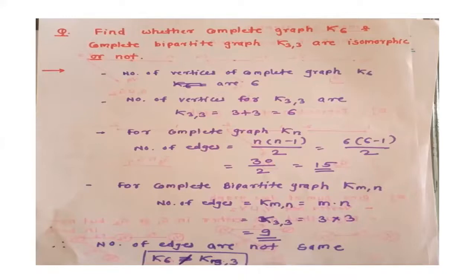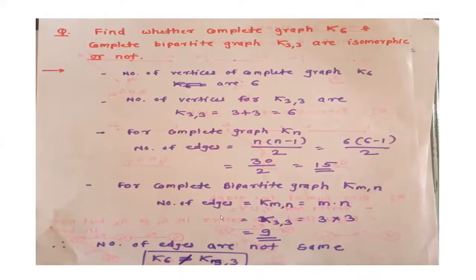For the complete graph, the number of edges is equal to n(n−1)/2, so 6 into 5 divided by 2, which is 30 by 2, equal to 15. For the complete bipartite graph, the number of edges is m into n, that is 3 into 3, which is 9. So the number of edges are not the same — K6 has 15 edges and K3,3 has 9. Therefore, these two graphs are not isomorphic to each other.